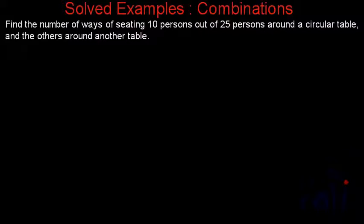Hi, so we have one more problem based on combinations, and actually in this problem we're going to use permutations also. Let's read the problem statement. The problem says: find the number of ways of seating 10 persons out of 25 persons around a circular table and the others around another table.